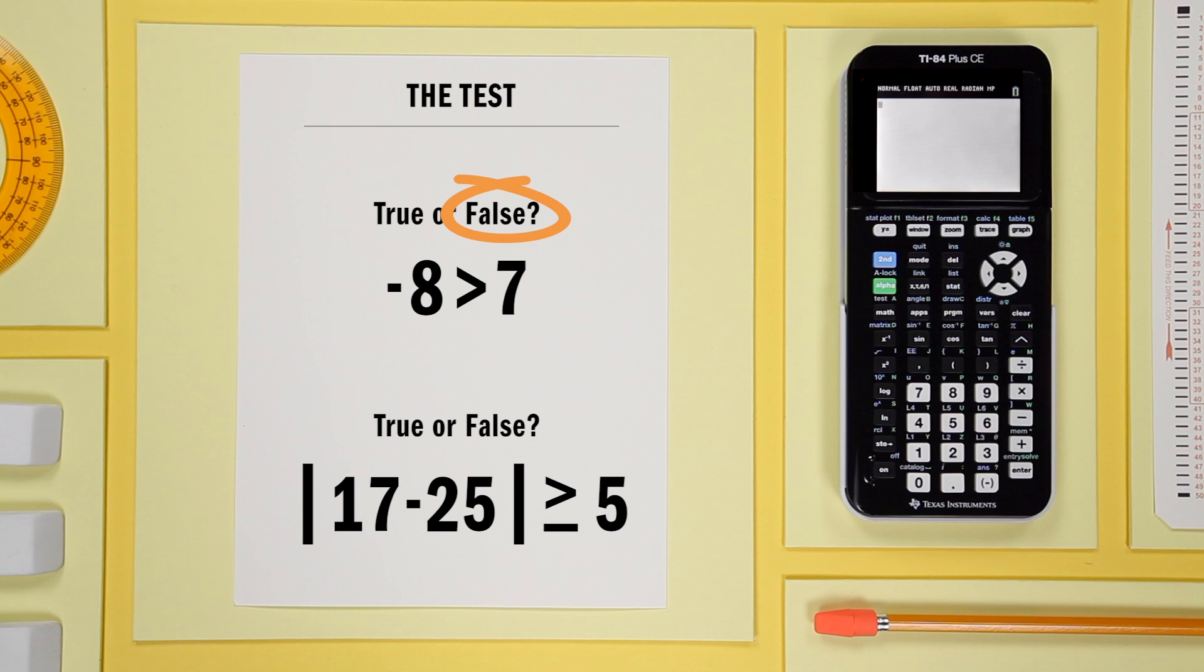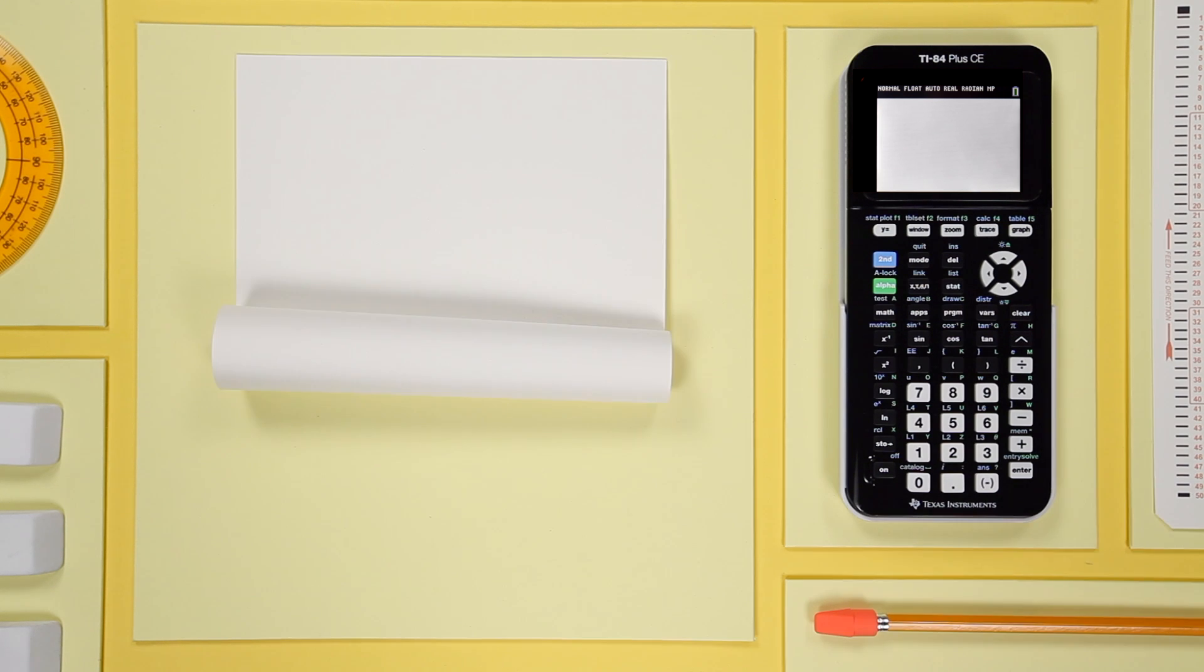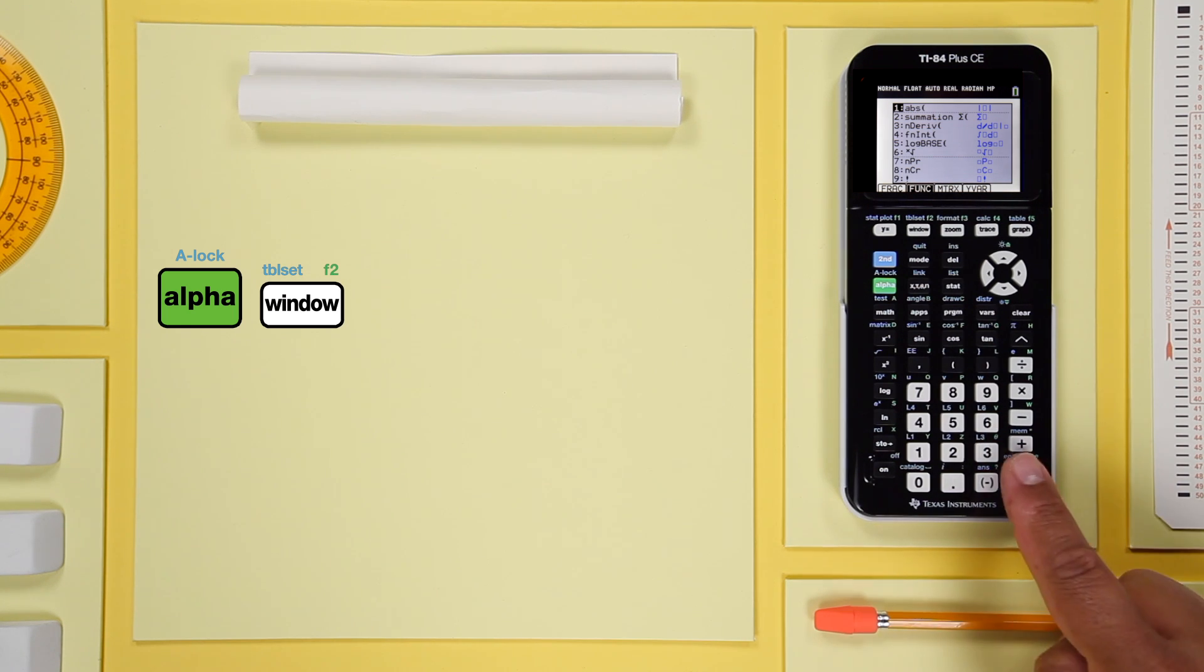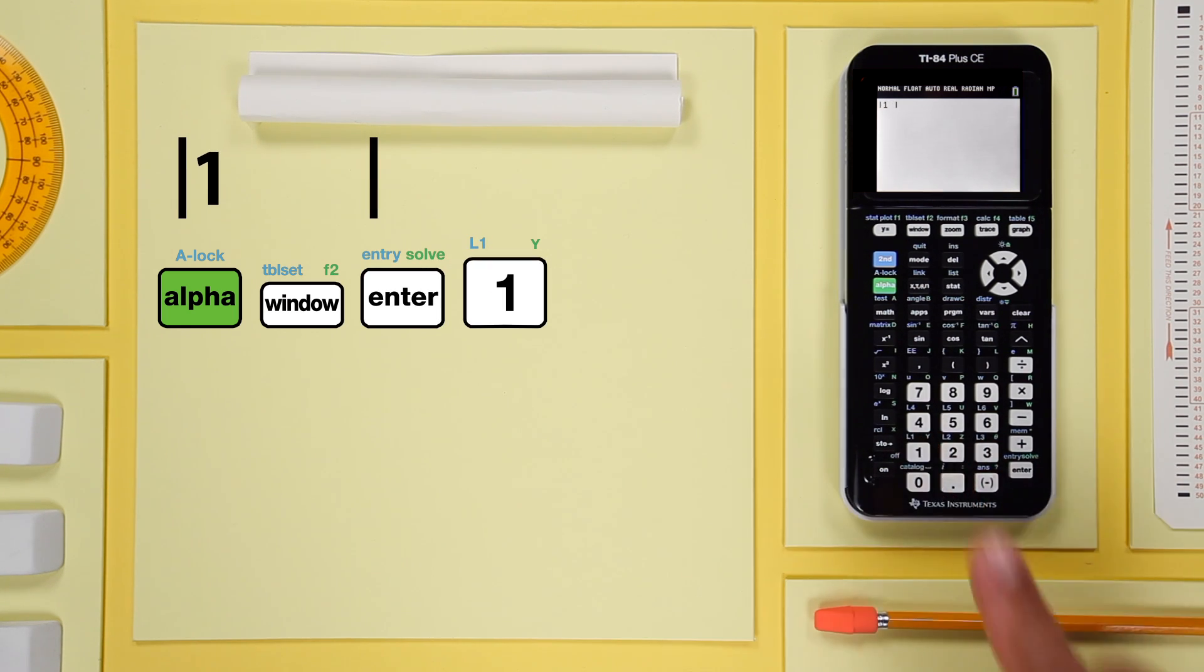Let's do another example but with a little more work. Is the absolute value of 17 minus 25 greater than or equal to 5? Start with the alpha key, then F2. Press enter. 17 minus 25.